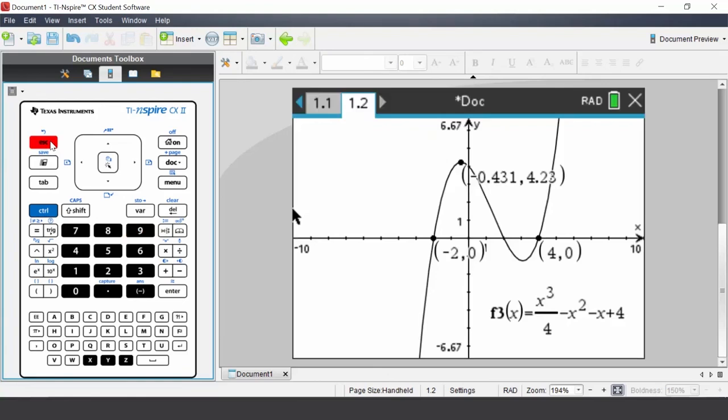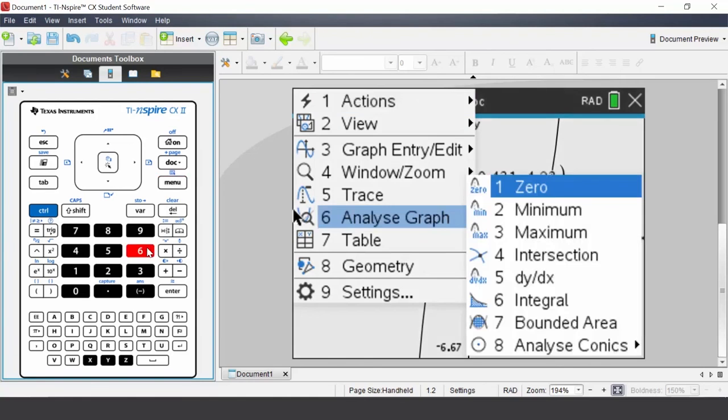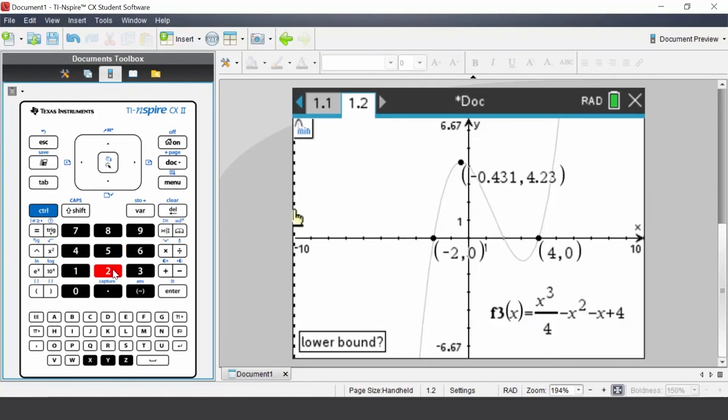A question could be: determine the minimum value for the domain from X from 0 to 2.5. Press menu, select analyze graph, select minimum. 0, enter, 2.5, enter. And the minimum value for the domain is shown on the screen.